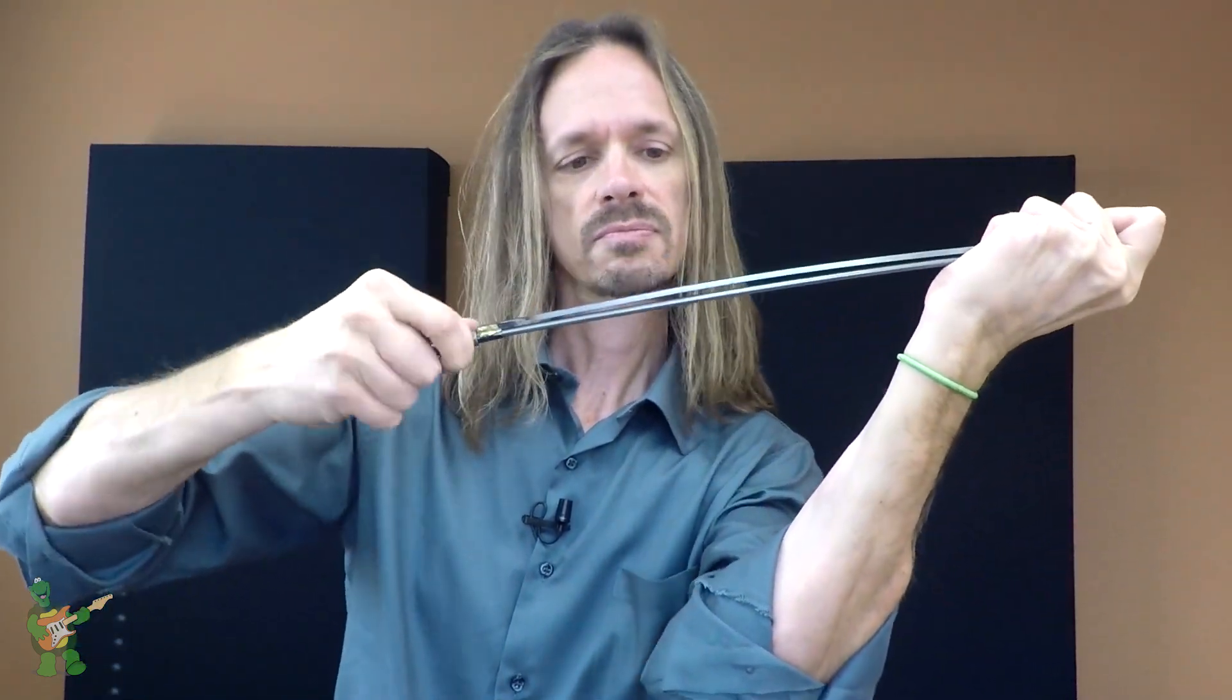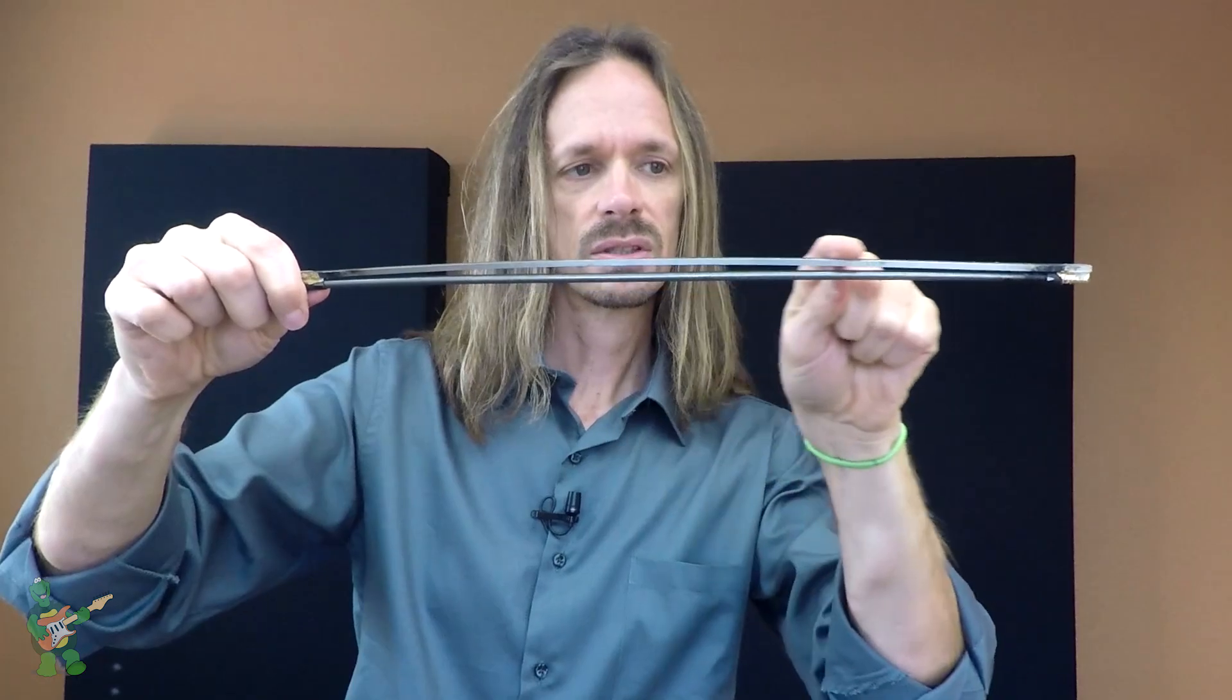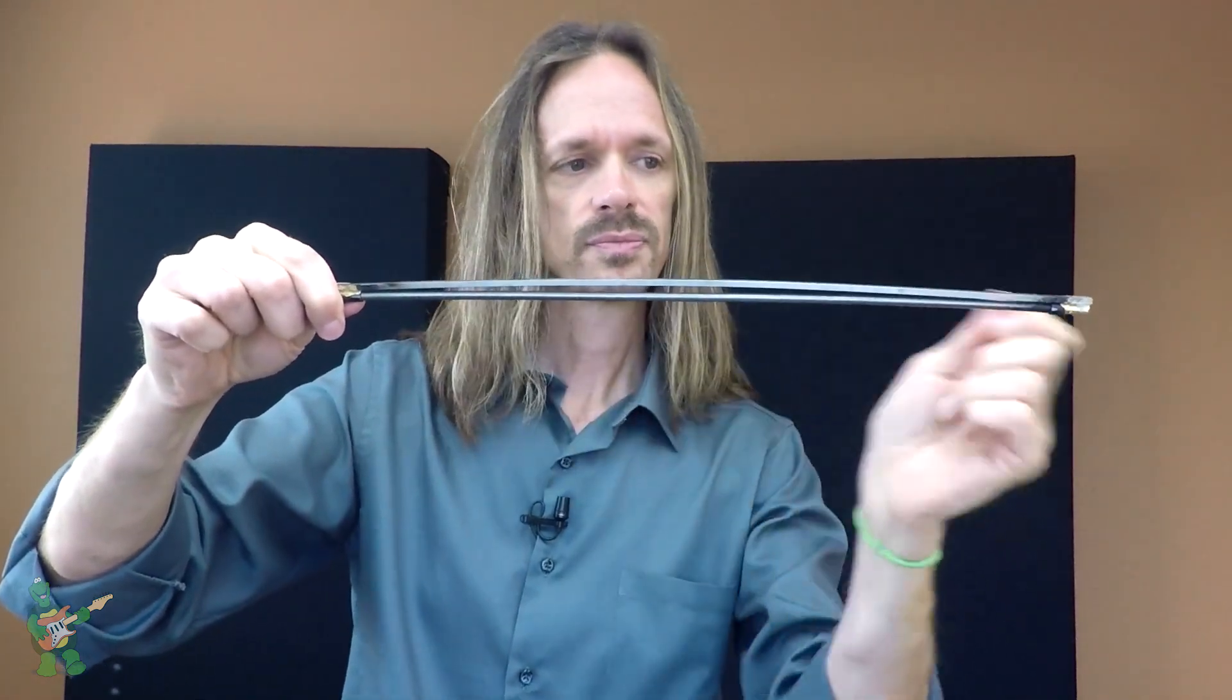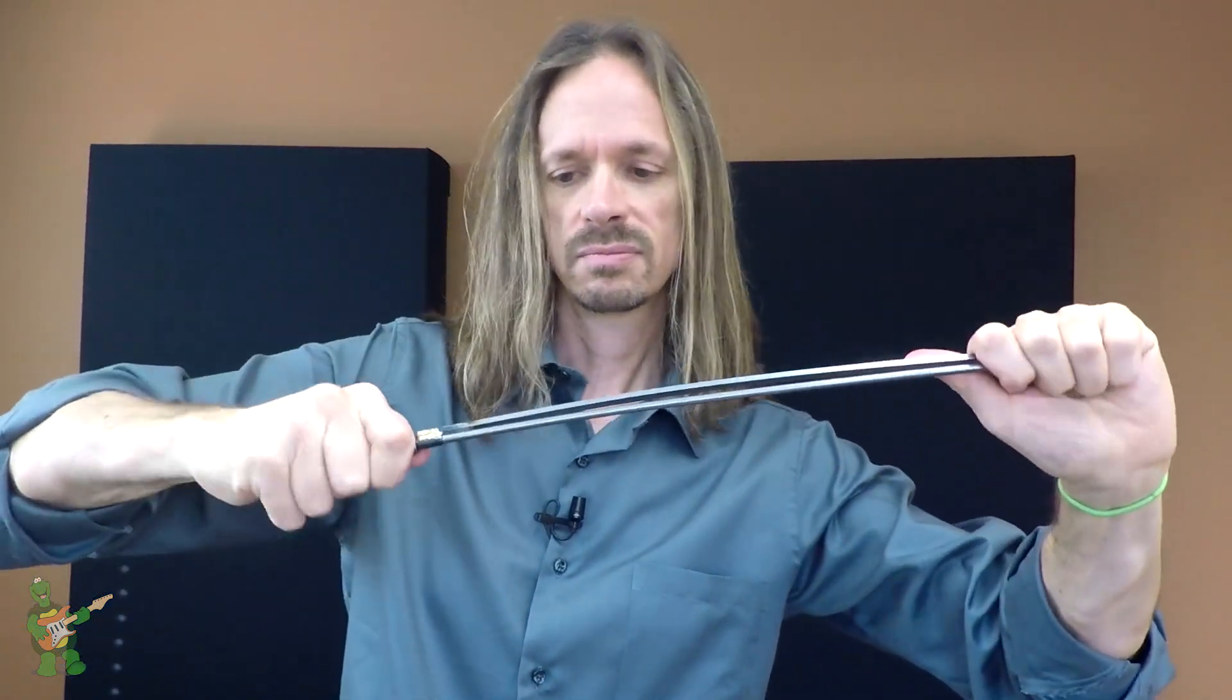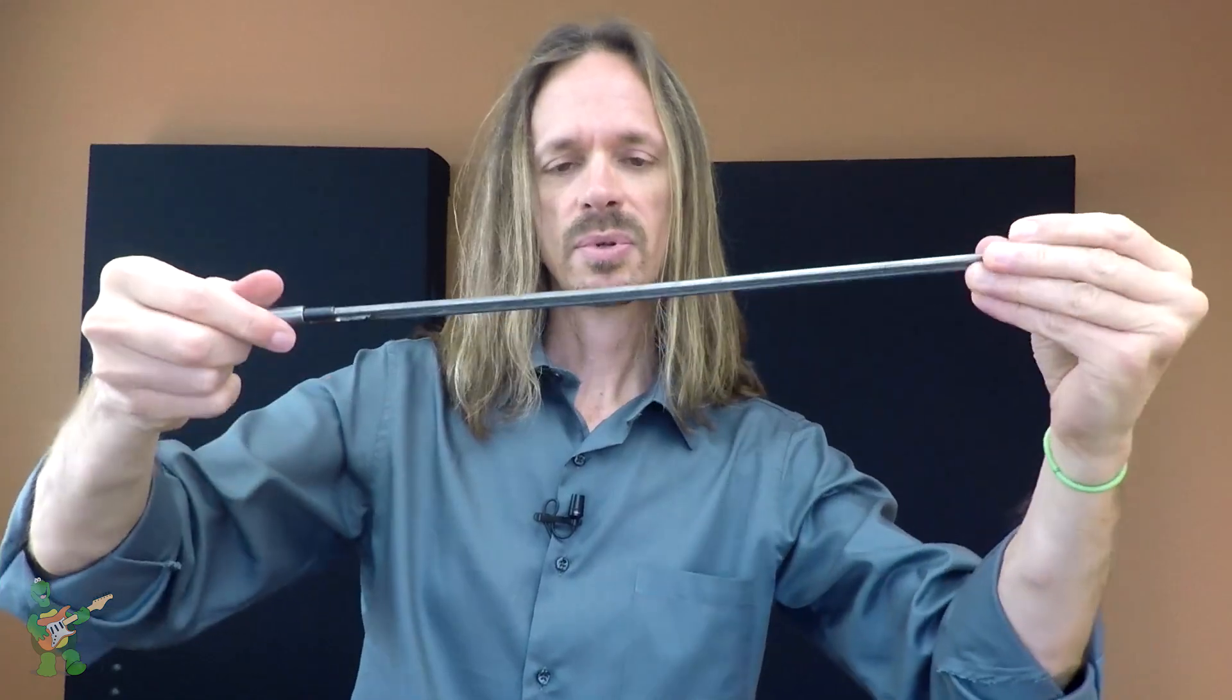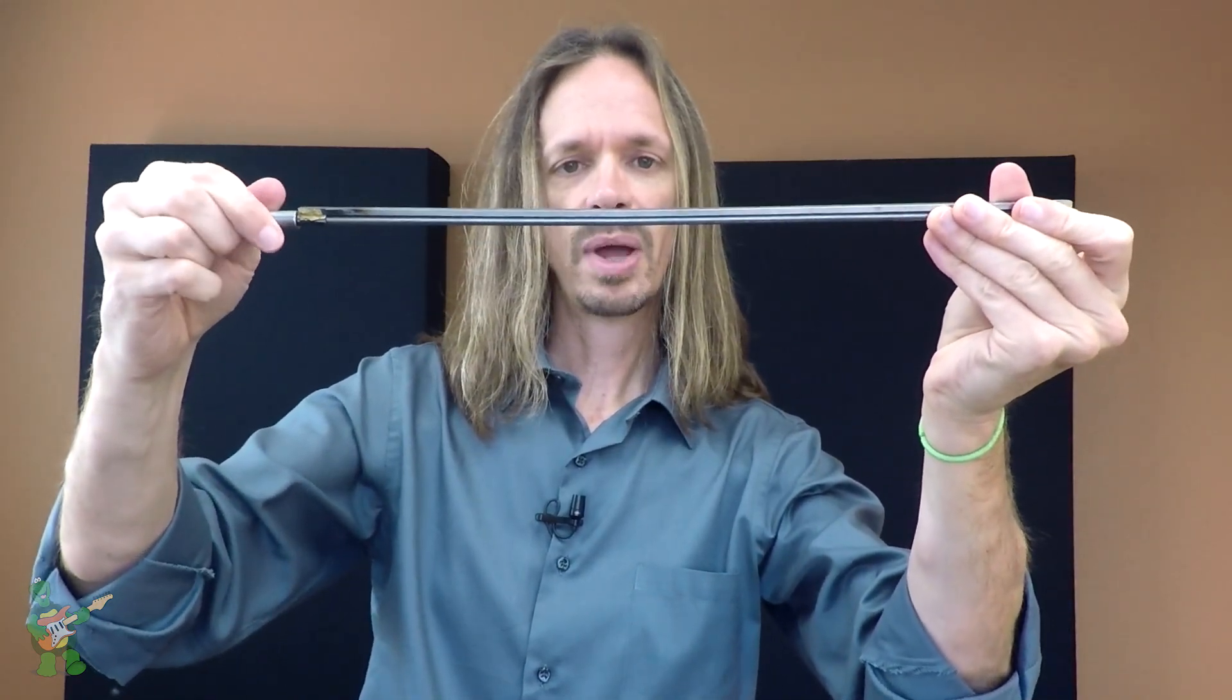As it does so, it will start to apply inward pressure, and that will cause our truss rod to bow. And as I release it, the opposite happens and the truss rod relaxes back to a flat position.